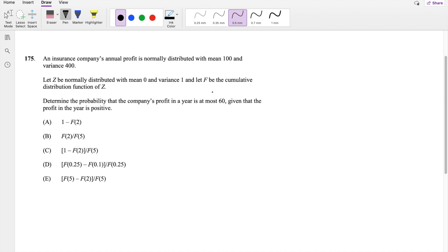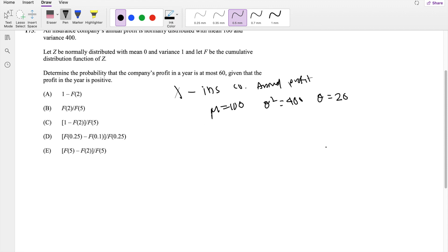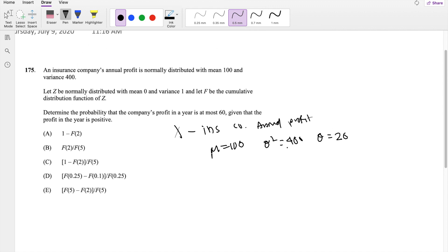An insurance company has an annual profit. Let's denote X as the insurance company's annual profit. It's normally distributed with a mean of 100 and a variance of 400. So that means they have a standard deviation of 20, right? Because standard deviation is just the square root of variance.